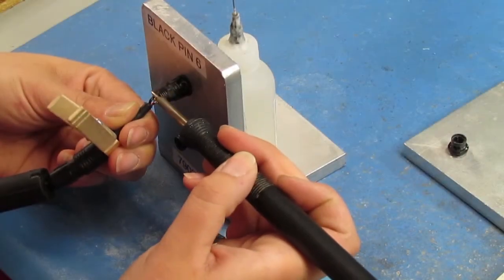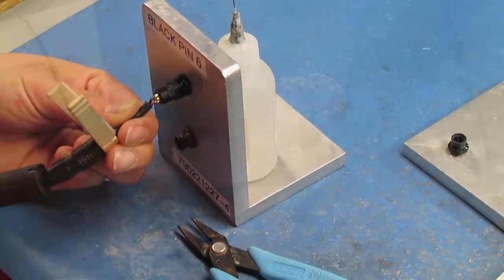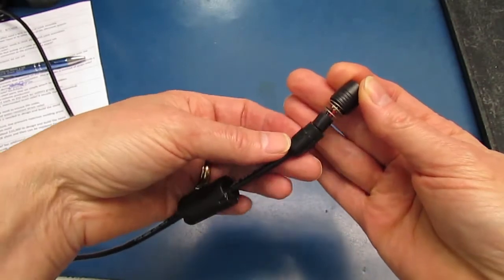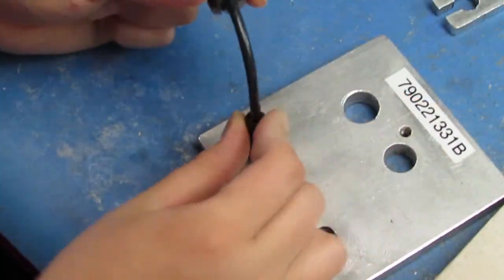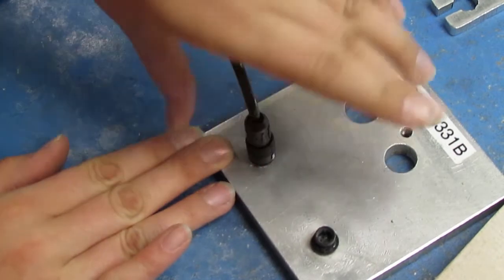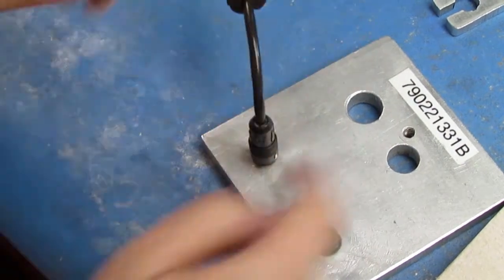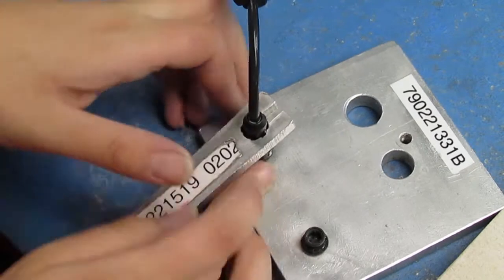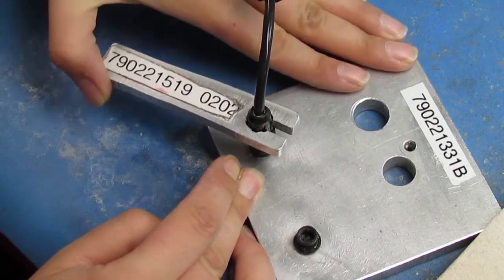For more complex cable assemblies, we have strain relief back shells, commercial off-the-shelf parts that slide onto the cables and tighten onto the connector. They are great for low volume production, but can cost from $1 each to $50 each for military-grade parts.